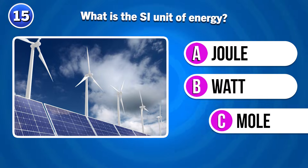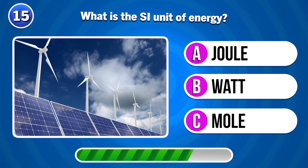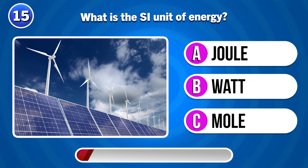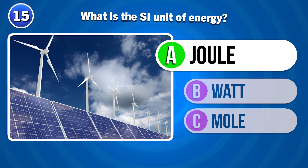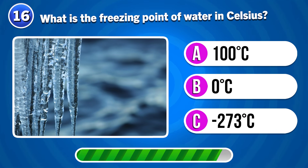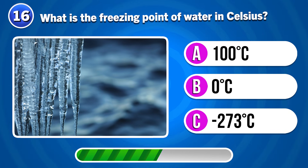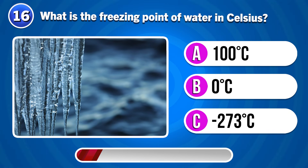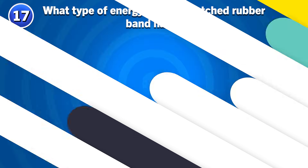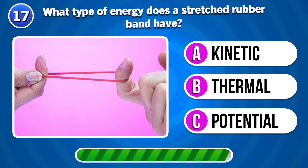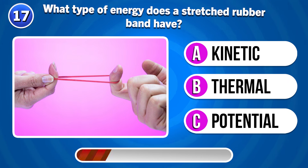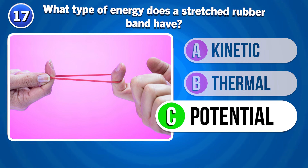What is the SI unit of energy? Joule. What is the freezing point of water in Celsius? Zero degrees Celsius. What type of energy does a stretched rubber band have? Potential energy.